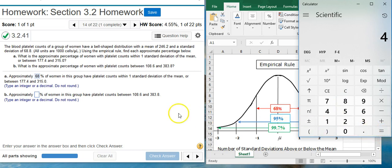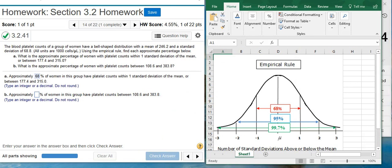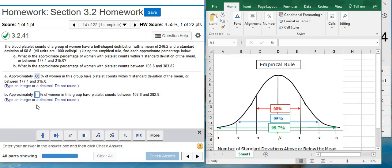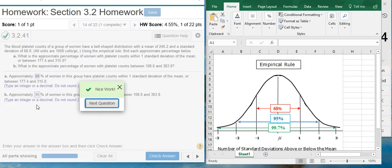So, that tells me that each one of these values that's given here is two standard deviations from the mean. Because, if I go back to my empirical rule, notice within two standard deviations of the mean, I've got 1, 2, 3, 4 standard deviation units. So, we're looking at 95% of the data between those two numbers. So, I'll put 95 here. Nice work!